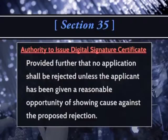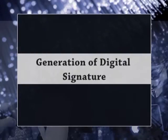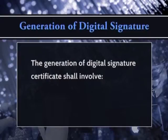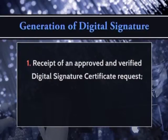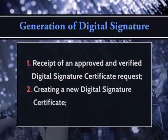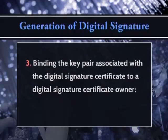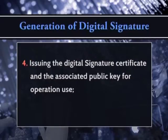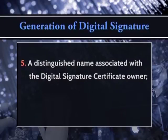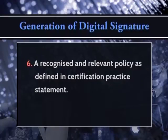The generation of a digital signature certificate shall involve: receipt of an approved and verified digital signature certificate request; creating a new digital signature certificate; binding the key pair associated with the digital signature certificate to a digital certificate owner; issuing the digital signature certificate and associated public key for operational use; a distinguished name associated with the digital signature certificate owner; and recognized and relevant policies as defined in the certification practice statement.